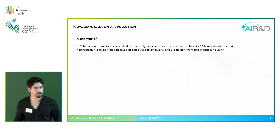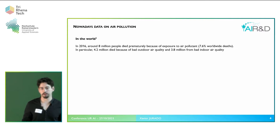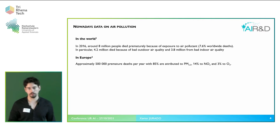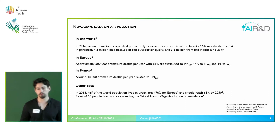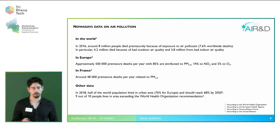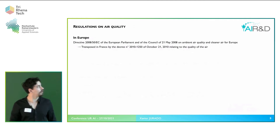So what are the data nowadays? There are about 8 million people that die prematurely each year due to air pollution. In Europe, it represents 500,000, mostly due to fine particles and nitrogen dioxide, and then a bit because of ozone. This problem should become an even greater issue because more and more people are living in cities, and cities are the areas most prone to air pollution. It is estimated that 9 out of 10 people live in areas exceeding World Health Organization recommendations.